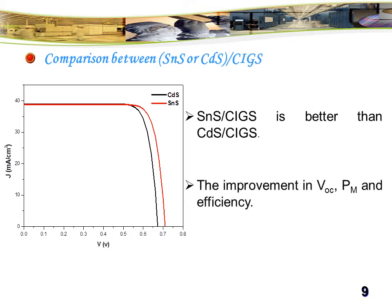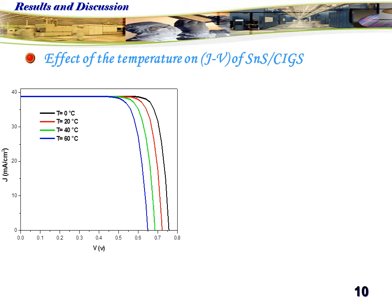There is improvement of voltage and the maximum power and the efficiency. The effect of temperature on the structure with tin sulfide: as seen, the increase of temperature leads to decrease in the efficiency. There is a decrease in the maximal power output with increase of temperature.